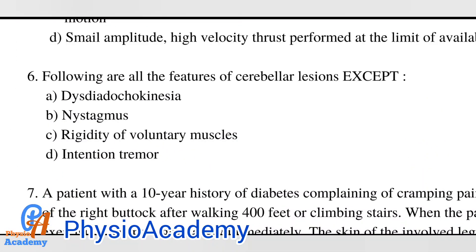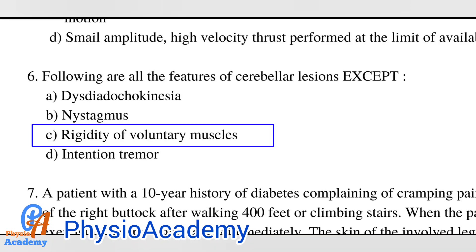Question number six: following are all features of a cerebellar lesion except. Option A: dysdiadochokinesia. Option B: nystagmus. Option C: rigidity of voluntary muscles. Option D: intentional tremor. The correct answer is option C: rigidity of voluntary muscles.